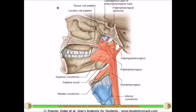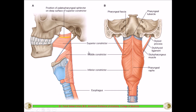The three longitudinal muscles are: the salpingopharyngeus, which takes origin from the pharyngeal or auditory tube; the palatopharyngeus, which takes origin from the soft palate; and the stylopharyngeus, which takes origin from the styloid process. The three circular muscles are the superior, middle, and inferior constrictors.